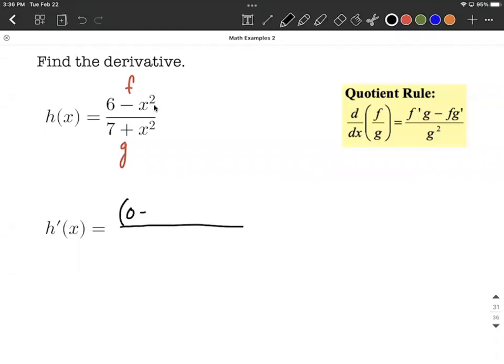This is just going to be the power rule where we bring the exponent down in front and reduce the exponent by 1. So 2 minus 1 is going to give us a 1 for our new exponent. I'm not going to write the 1 here for now. Next, we copy down the g. So simply say 7 plus x squared is going to be g, our denominator.